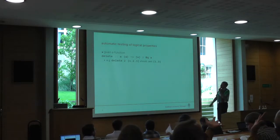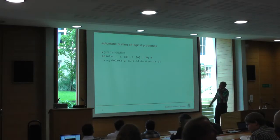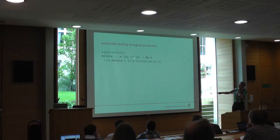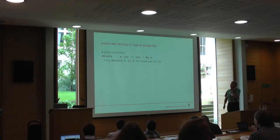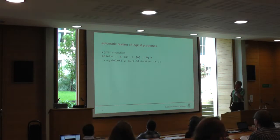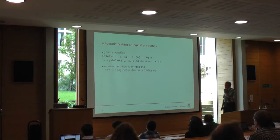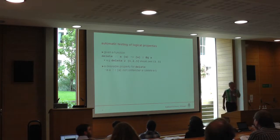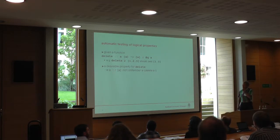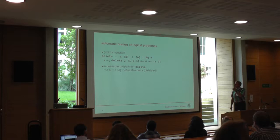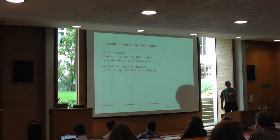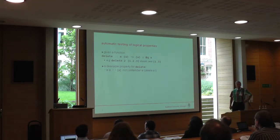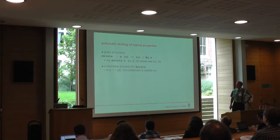Automatic testing of logical properties. I have a function like this — delete this value from this list of elements — and then the property, for instance, for any element and any list of elements, if you delete the element from the list, then it's not a member of the list.